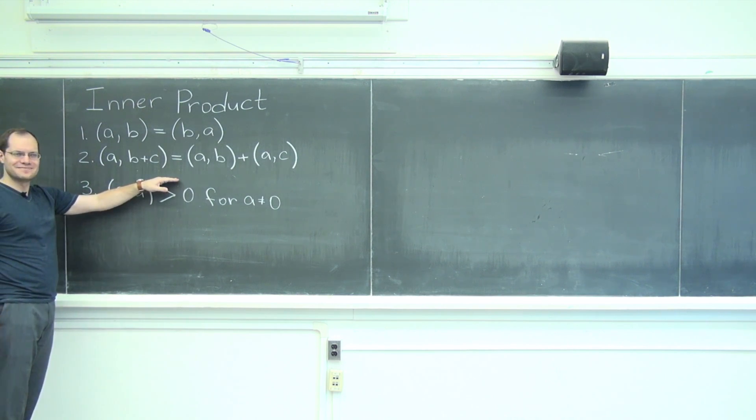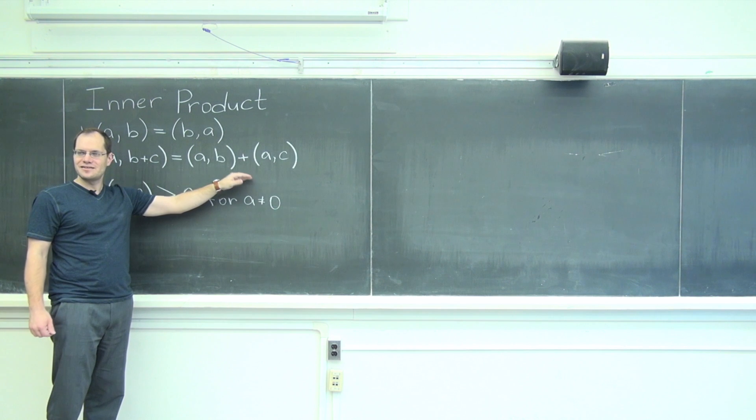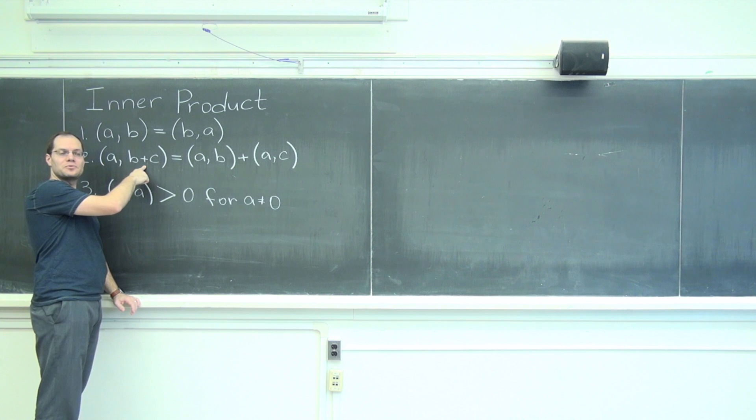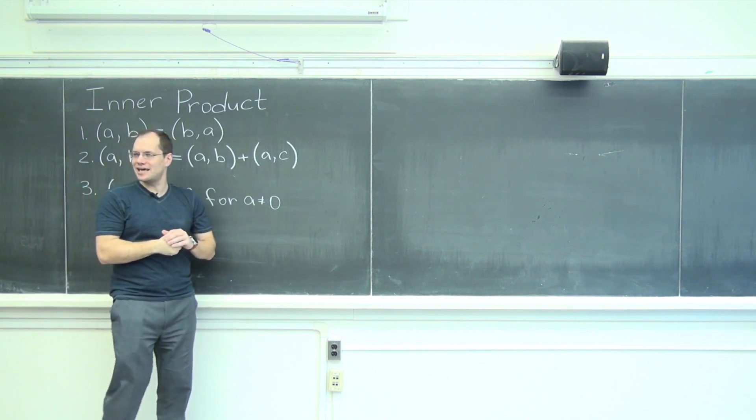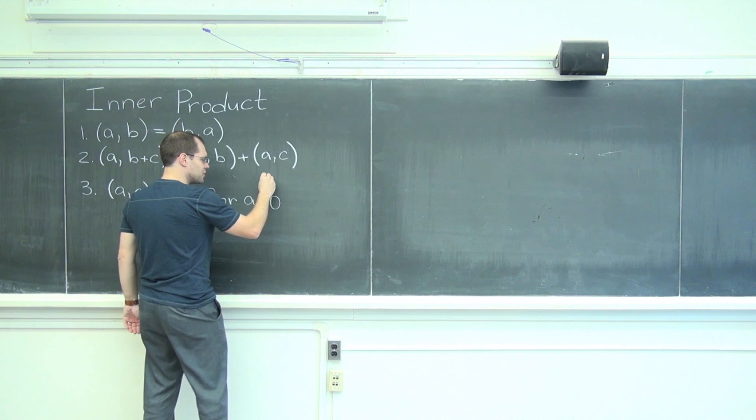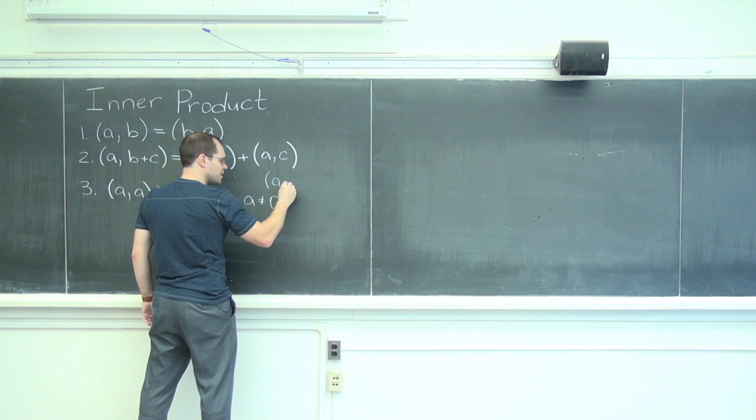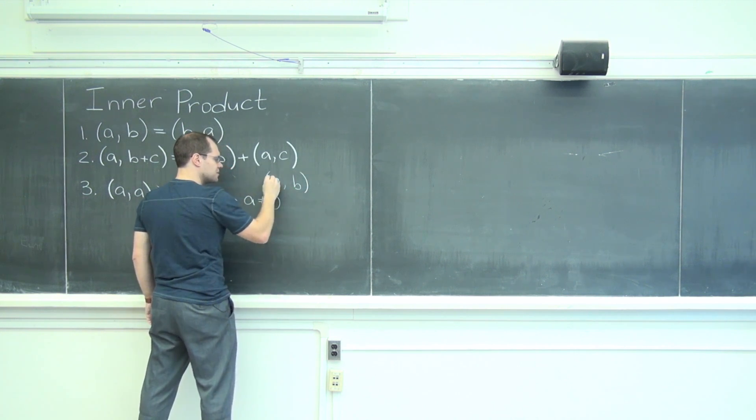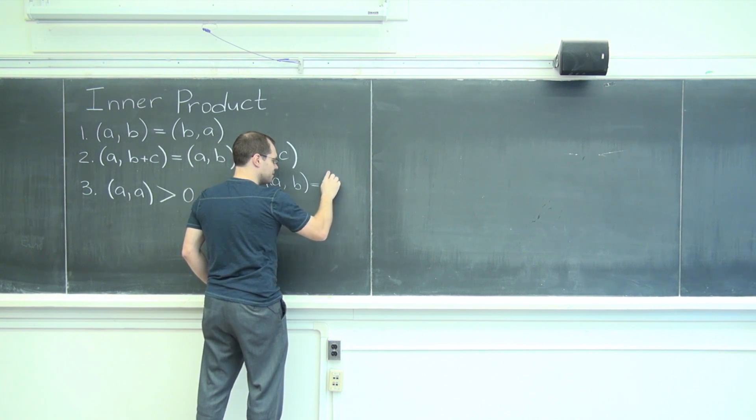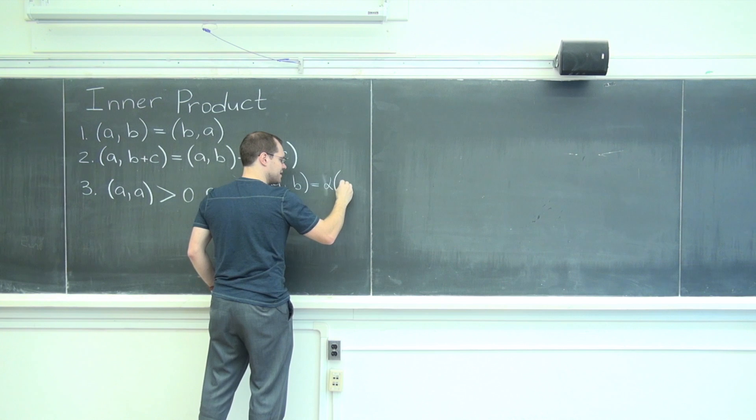So the missing element here is that this is half of distributivity. This is the distributive property with respect to the sum of two vectors, but what about with respect to multiplication by a scalar? So there is this additional property which is also part of distributivity, which I'll write here and erase in a moment. If you take a and b and you multiply a by a number, then the result is multiplying the inner product by that same number.